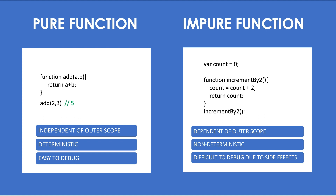I have another example on the right side, where I have a variable called count, which is assigned to 0 initially. Then we have a function called incrementBy2. Inside this, we are updating the count variable by adding 2, and this function returns the updated count. So when I call incrementBy2, I don't know what the output would be — when count is 0, it would be 2; if count is 2, it would be 4. Since we are accessing a variable outside the scope of this function, we don't know the output for sure. So the first example is independent of the outer scope — it depends only on values within that scope, so it's deterministic.